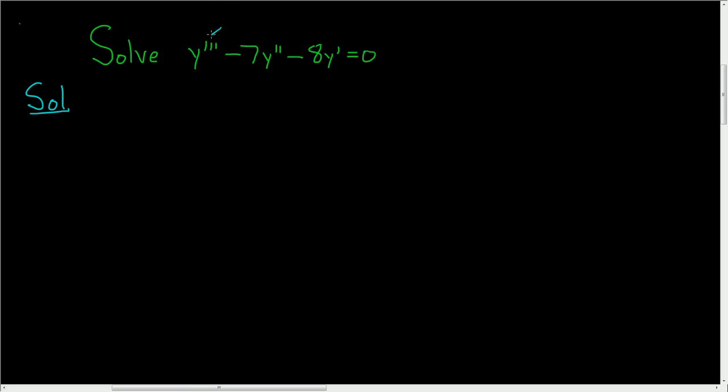We'll start by writing down the characteristic equation. Because we have a third derivative here, we write m cubed, minus 7, and then we have the second derivative so it's m squared, and then the first derivative so it's simply m. And this equals 0.